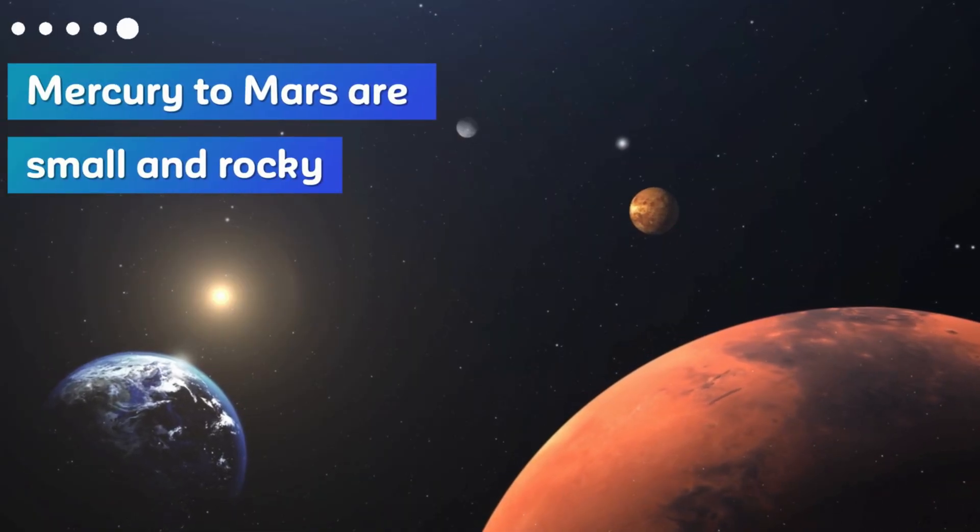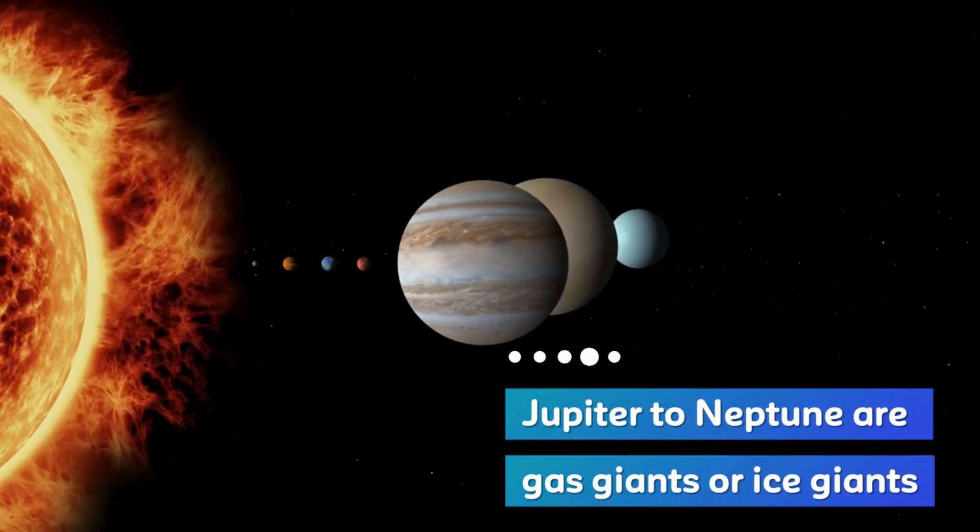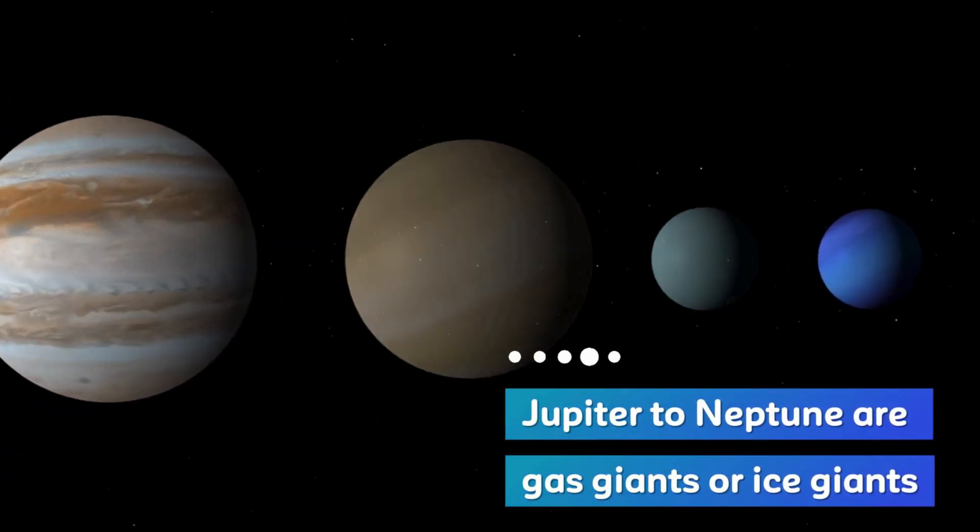The first four planets, Mercury to Mars, were small and rocky. The last four, Jupiter to Neptune, are gas giants or ice giants.